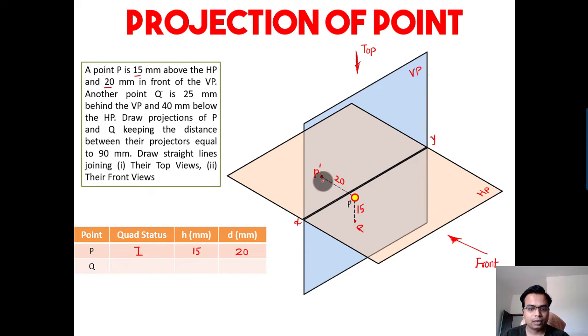When you join this, this is the line connecting the front view with the top view, also known as the projector. Now let's talk about point Q.